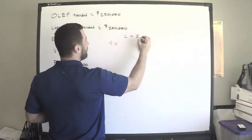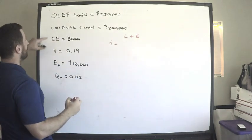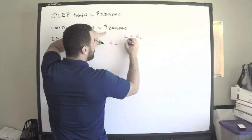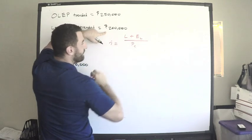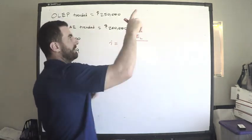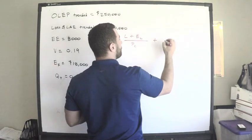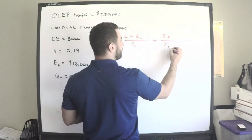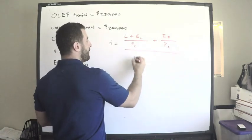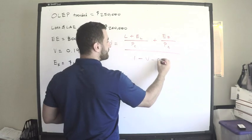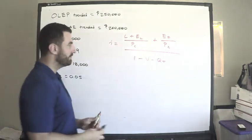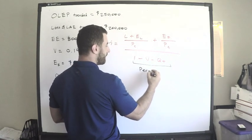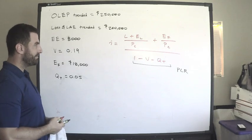Plus our fixed expense, and we need to write that as a portion of our premium current rate level, divided by one minus v minus qt. By the way, more terminology - this is typically called the permissible loss ratio, the PLR.